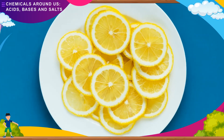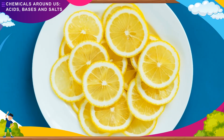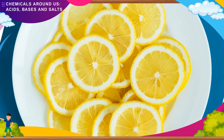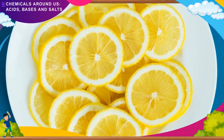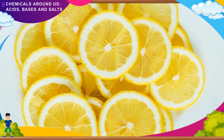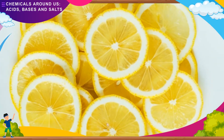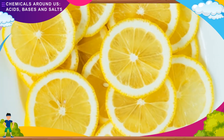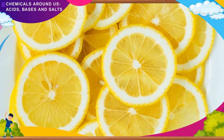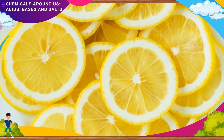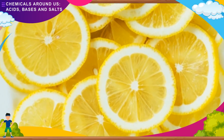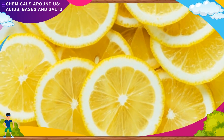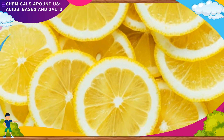For example, lemon and tamarind have a sour taste. Substances which have a sour taste, like lemon juice or tamarind juice, are said to contain acids. The acids in these substances are natural acids. The word acid comes from the Latin word acidus, which means sour.